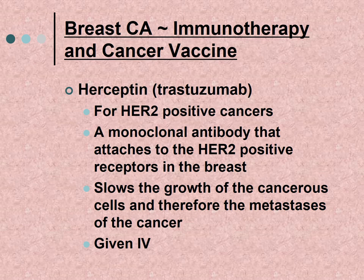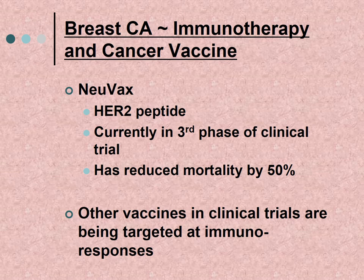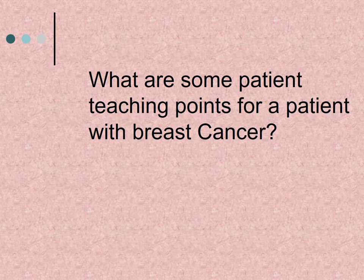Regarding immunotherapy and cancer vaccines: Pertuzumab is a drug still in testing for HER2-positive cancer. HER2 is a genetic protein. It is a monoclonal antibody that attaches to HER2-positive receptors in the breast, slowing the growth of cancerous cells and therefore the metastases. It is given IV. Nuvax is a HER2 peptide currently in phase three of clinical trials and has been shown to reduce mortality by 50%. Other vaccines in clinical trials are being targeted at immune responses.